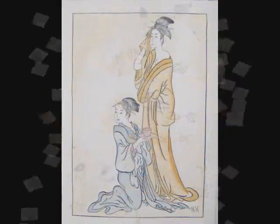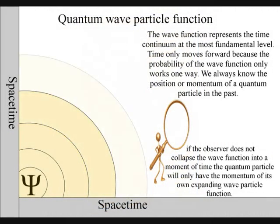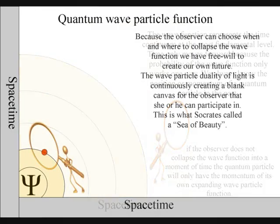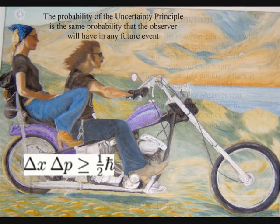She will collapse the wave-function into moments of time and space, creating her own space-time geometry. Any object can collapse the wave-function, but it is because the observer can choose when and where to collapse the wave-function that we have free will to create our own future.